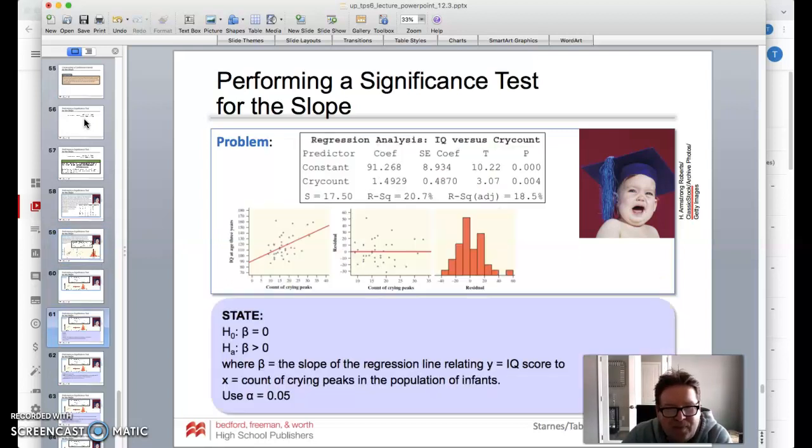State: we're going to say that that slope is equal to zero, and the alternative is that that slope is bigger than zero, implying that there is. The slope beta is the slope of the regression line relating Y, the IQ score, to X, the count of crying peaks in the population of infants, and we're going to do a 5% significance level.